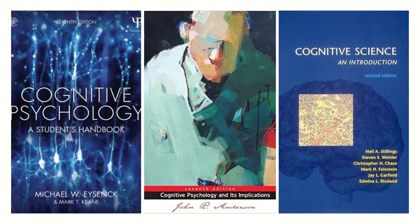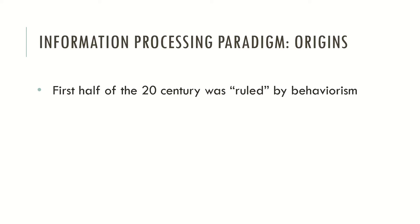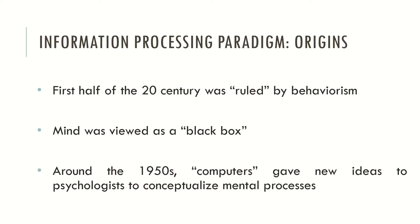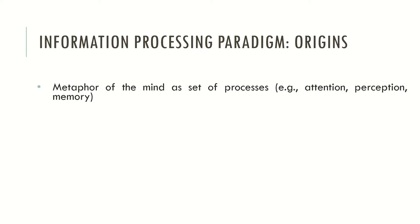Now let's see what the information processing paradigm is. The first half of the 20th century was ruled by behaviorism, and the mind was viewed as a black box. However, around the 1950s, computers gave new ideas to psychologists to conceptualize mental processes. This was an approach that helped psychologists conceptualize mental processes beyond the black box metaphor — a new metaphor describing the mind as a set of processes such as attention, perception, or memory. The mind was compared to how computers process information.